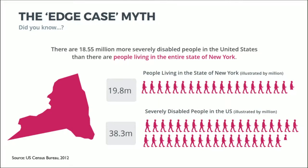Accessibility is not really much of an edge case because we have 18.55 million more severely disabled people in the United States than there are people living in the entire state of New York. So if you came to your client and said, hey, we got your website done and it's working perfectly except it doesn't work in New York, there is no way they would let you launch that website.